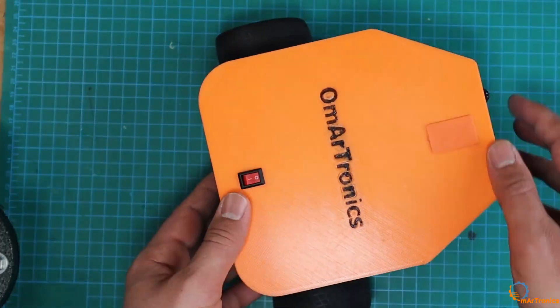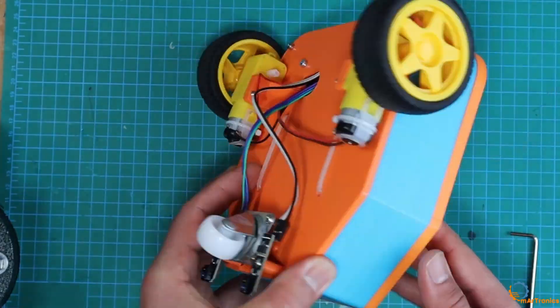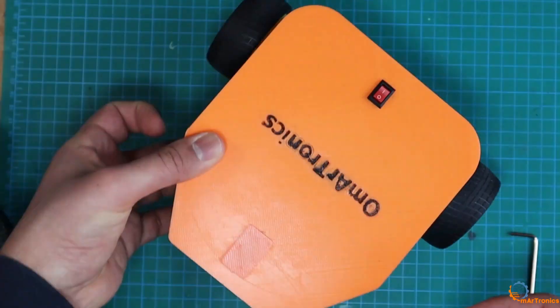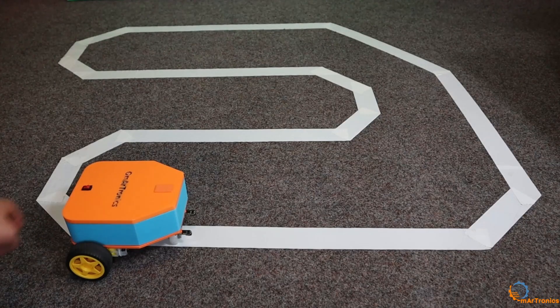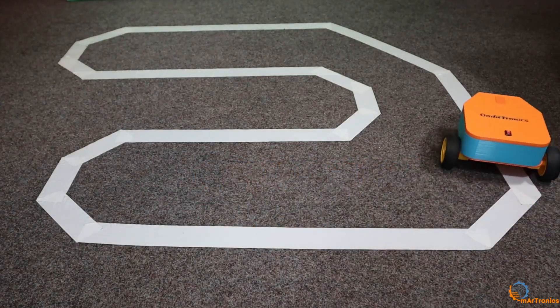I programmed the Arduino board. Then, I assembled the robot. Once complete, I began testing it. I placed the robot on this white strip against the dark background. I observed how it follows the line.